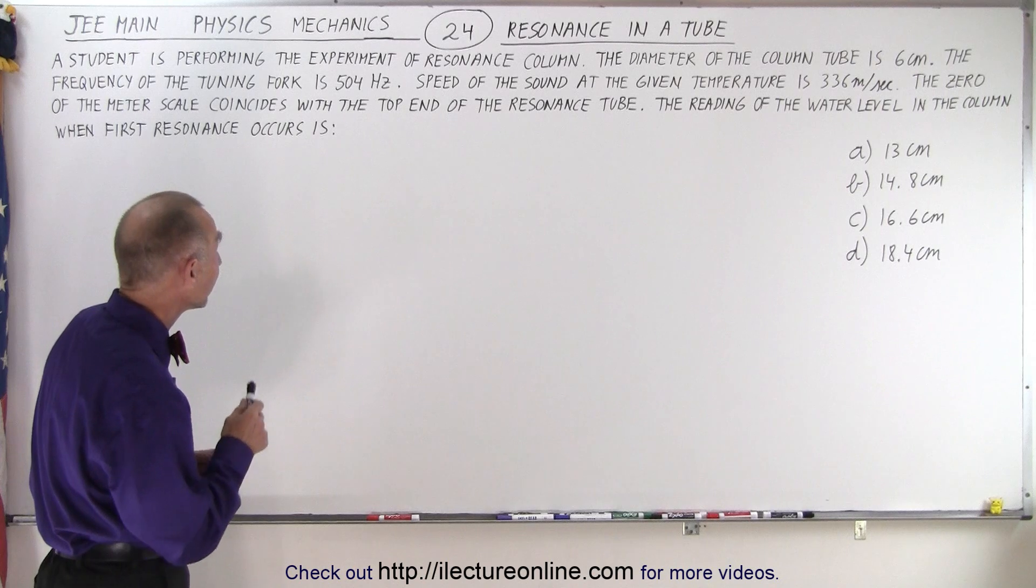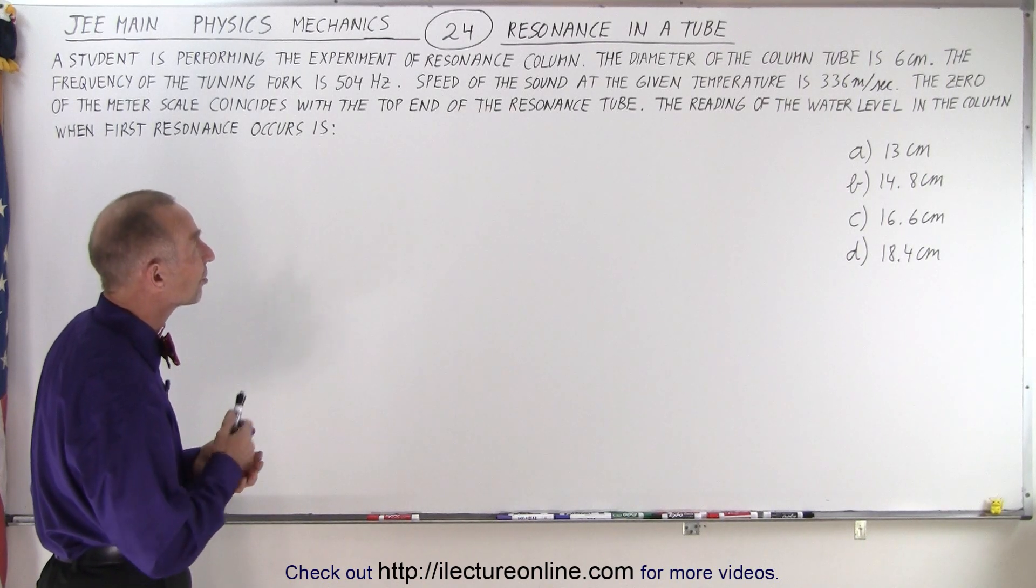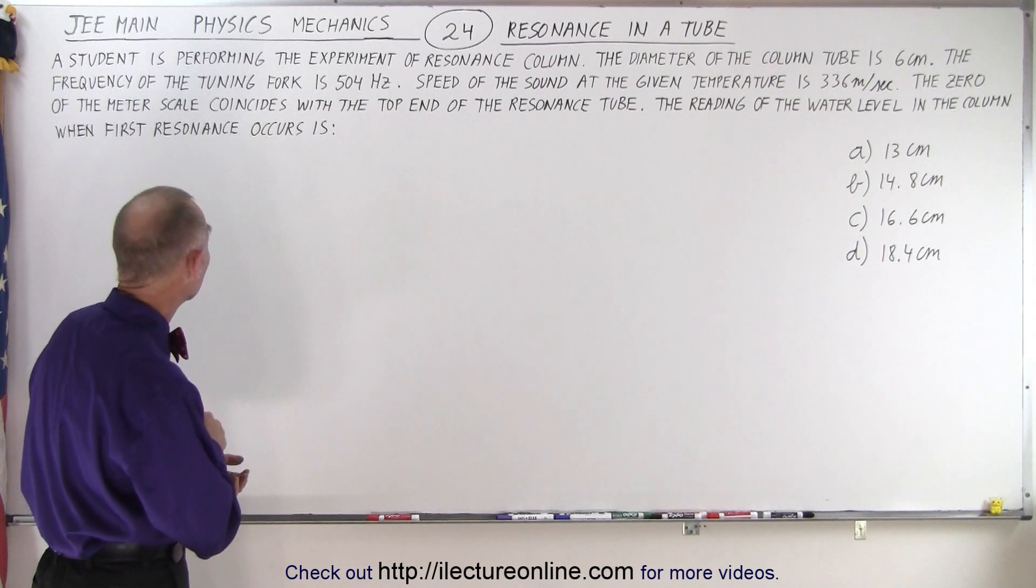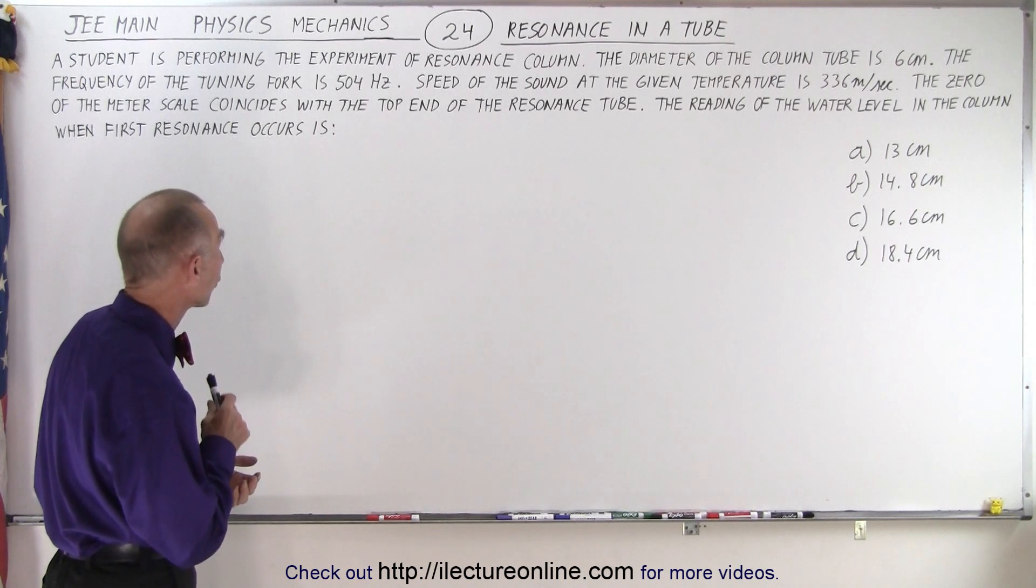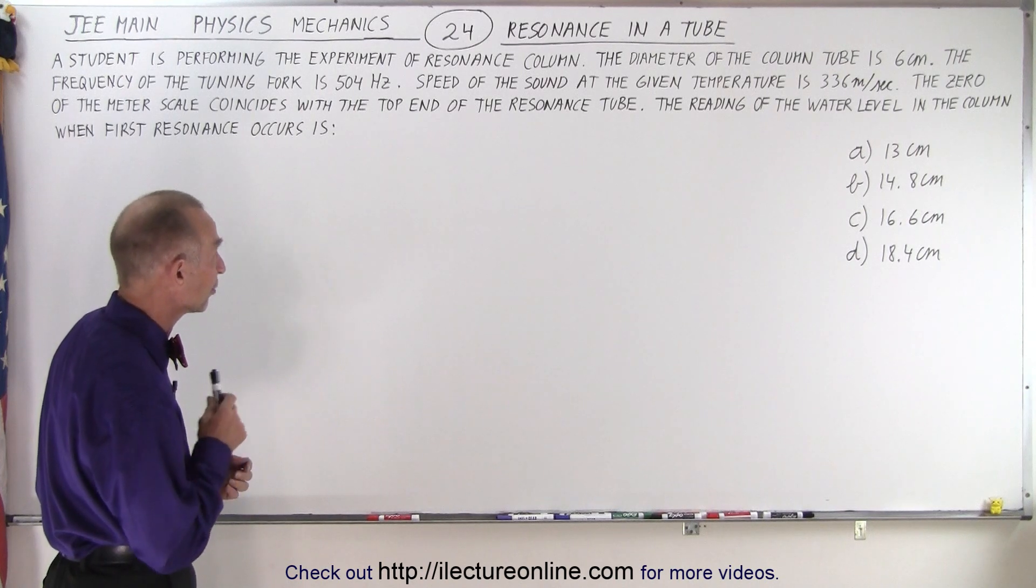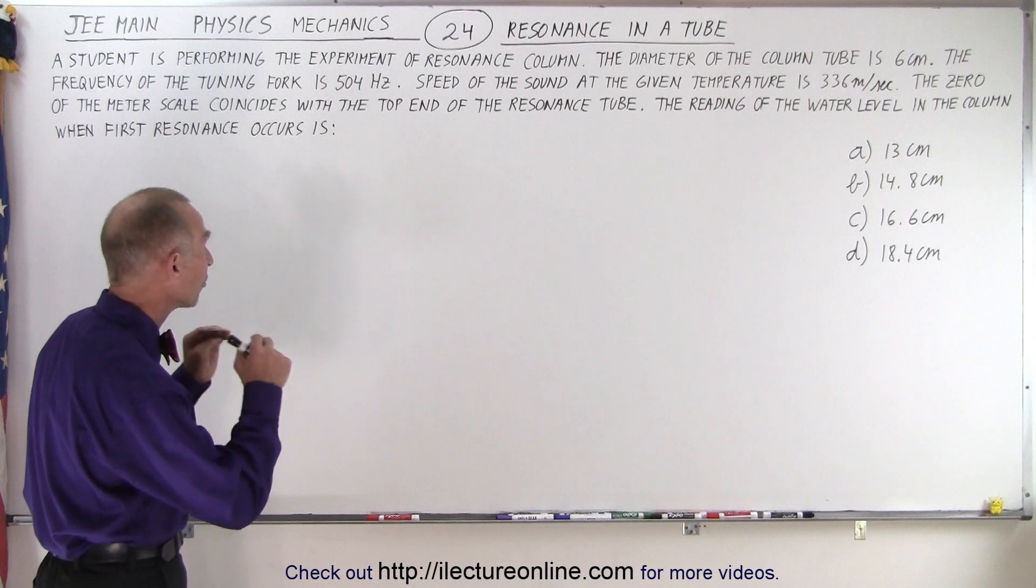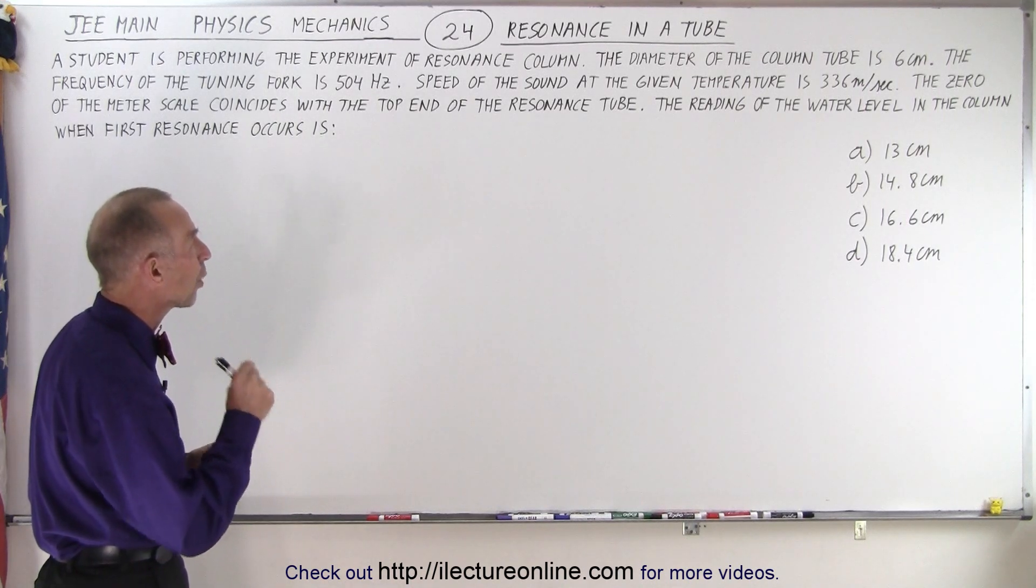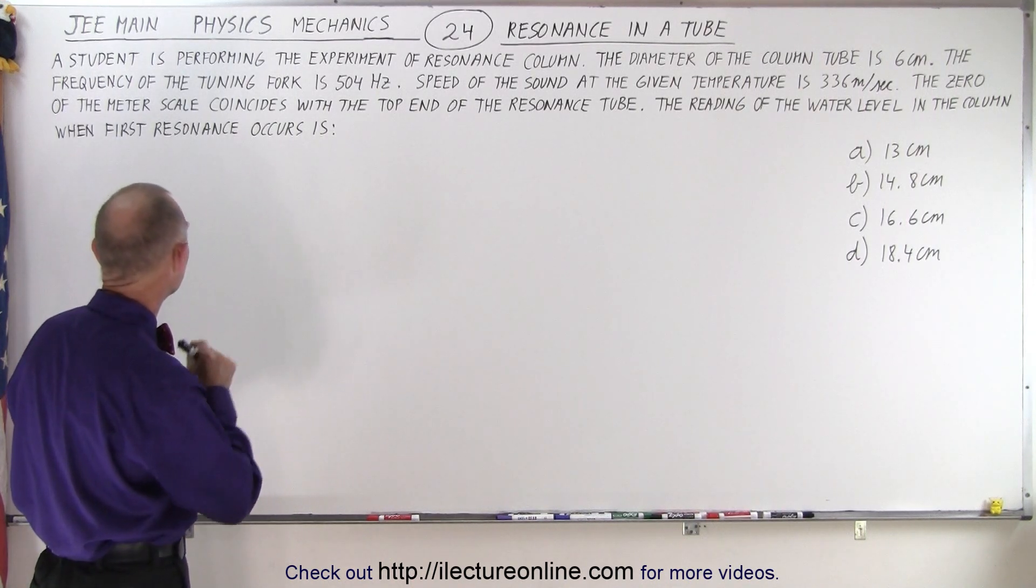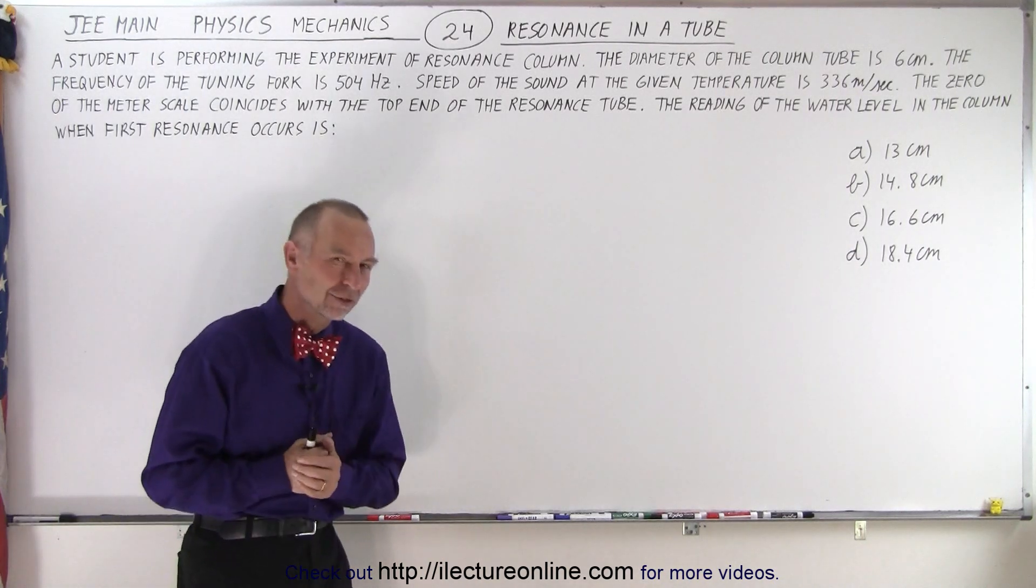A student is performing the experiment of resonance column. The diameter of the column tube is 6 centimeters. The frequency of the tuning fork is 504 hertz. The speed of sound at the given temperature is 336 meters per second. The zero of the meter scale coincides with the top end of the resonance tube. The reading of the water level in the column when first resonance occurs is, and we have four possible answers.